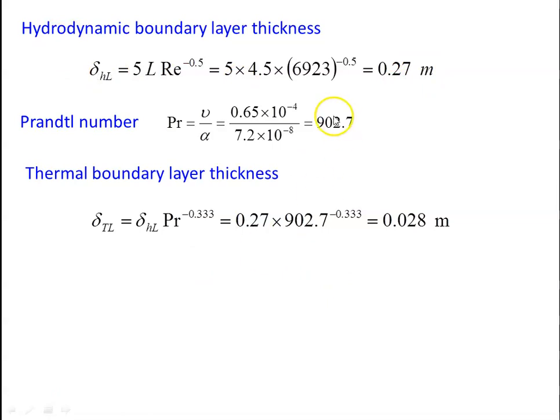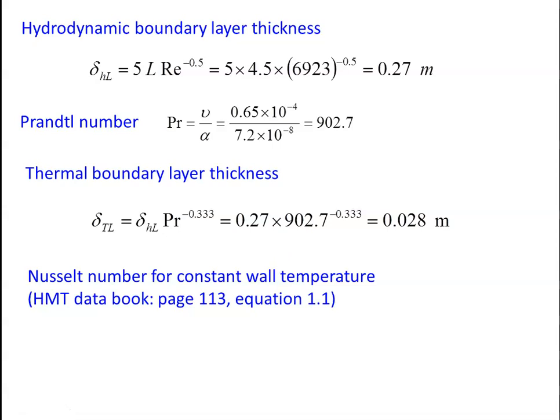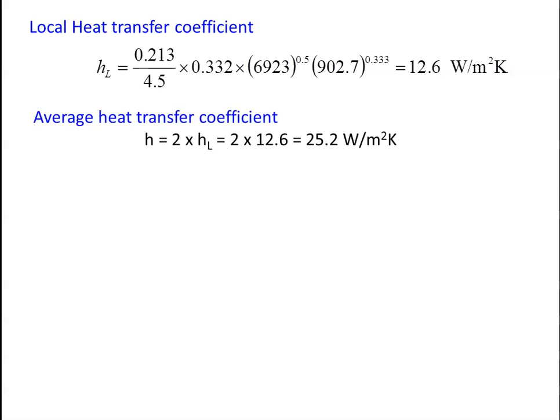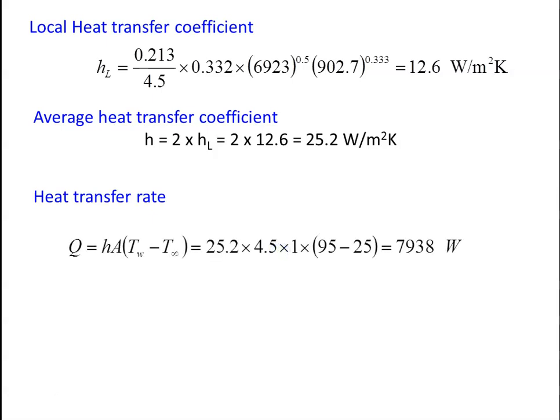Local Nusselt number equation 1.1, page 113: Nu = hL/k = 0.332 × Re⁰·⁵ × Pr⁰·³³³. Local h = (0.213 / 4.5) × 0.332 × (6923)⁰·⁵ × (902.7)⁰·³³³ = 12.6 W/m²·K. Average h = 2 × 12.6 = 25.2 W/m²·K. Heat transfer rate: Q = h × A × ΔT = 25.2 × (4.5 × 1) × (95 − 25) = 7938 W.